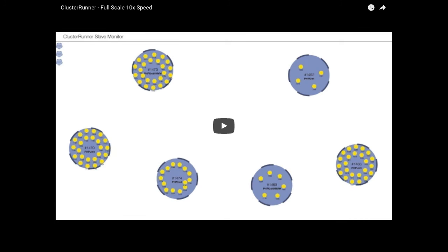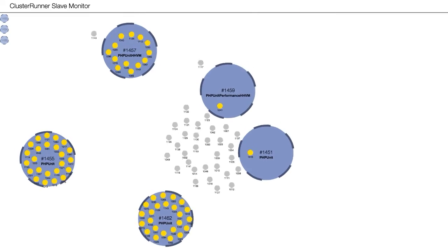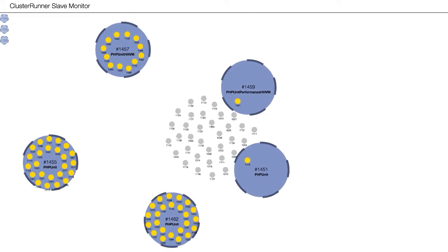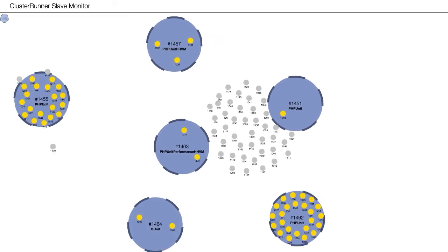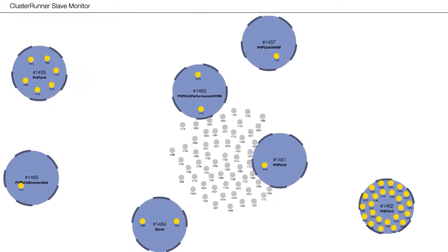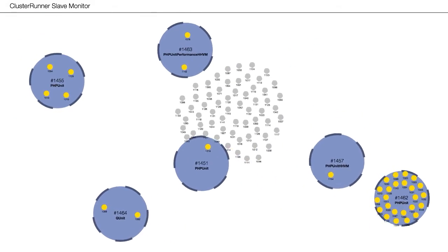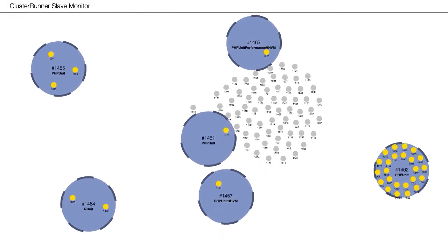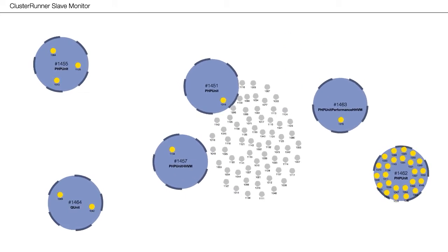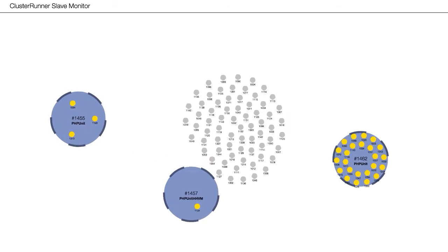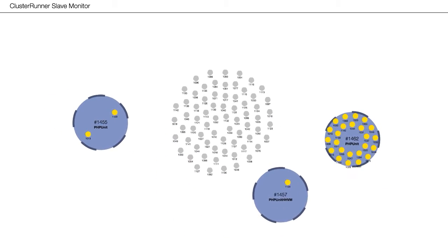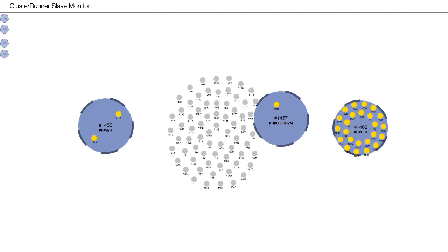Here's a video from our production Cluster Runner instance at Box, sped up. You can get an idea of how dynamic it is — slave hosts switch from one build to another without having to wait for all slaves on a single build to finish before they can work on another build. And that's pretty much it for setting up Cluster Runner and running your build.